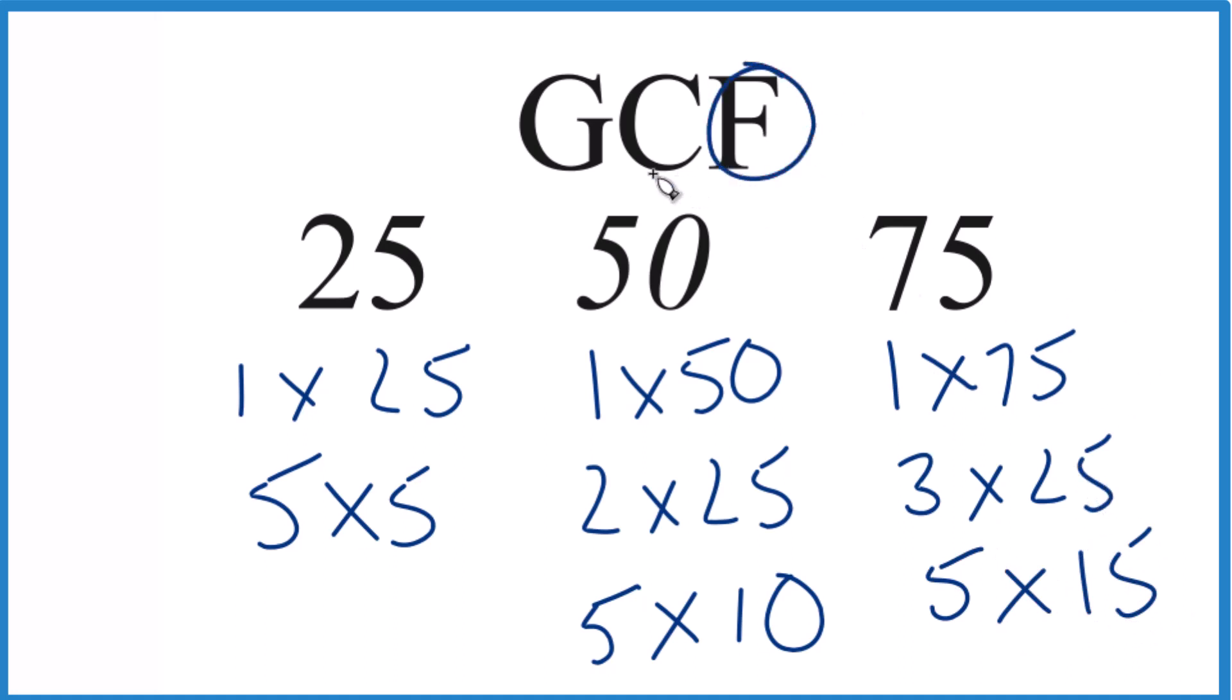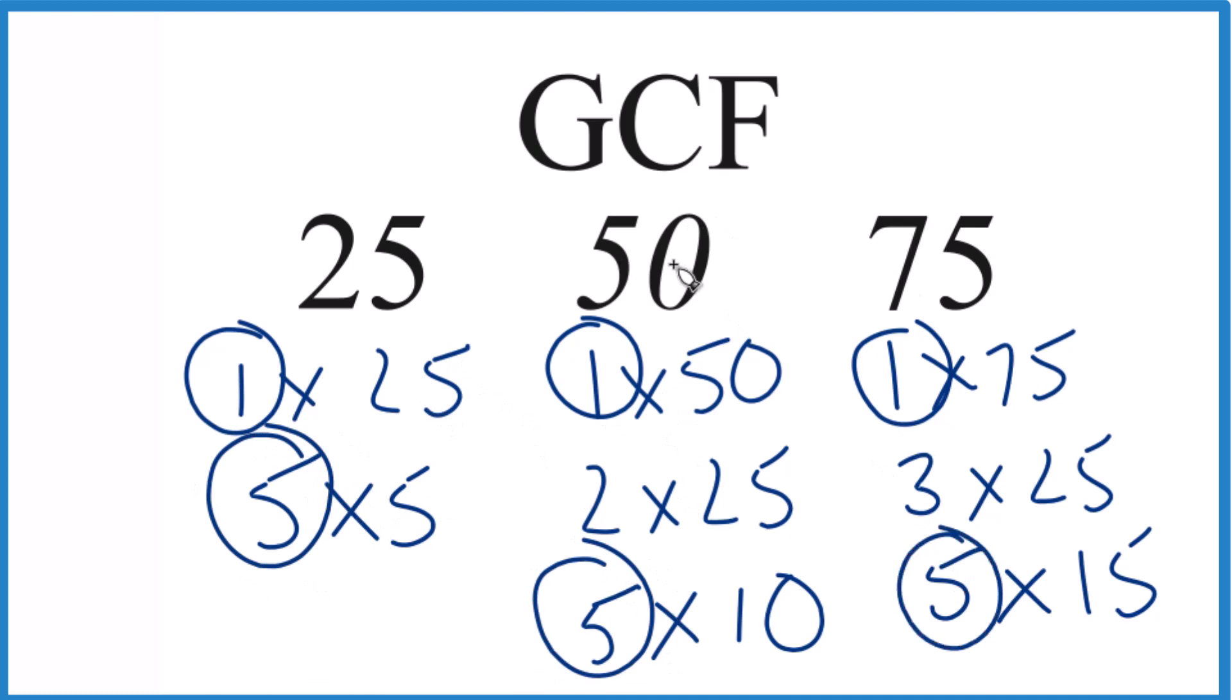So we have our factors, we're going to look at the common factors and then choose the greatest one. It looks like 1 goes into everything evenly, that's a common factor. 5 is also a common factor between 25, 50, and 75, but the greatest common factor is 25, which goes into each number evenly.